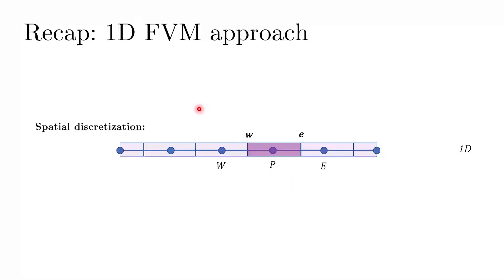So before I look at the two-dimensional version of this, let me quickly recap about the one-dimensional FVM scenario. So when we discretize the one-dimensional domain that is represented by these points here, we considered a finite volume around any point of interest P. And we said that the points where this finite volume cuts the grid or intersects the grid, we call them as corresponding control volume faces.